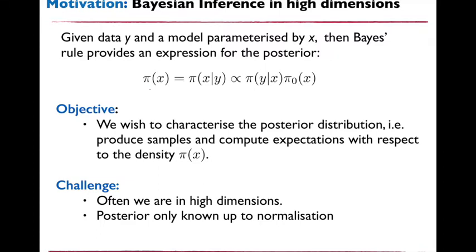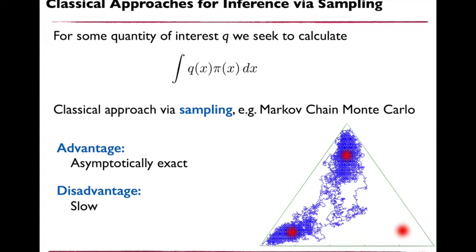This has motivated numerous classical approaches based on Markov chain Monte Carlo (MCMC). These sampling approaches are very generally applicable, very well developed, and a very mature field. The advantage is that they are asymptotically exact — with sufficient computational effort you can arrive arbitrarily close to the true solution. The disadvantage is that convergence to the true solution is often incredibly slow, leading to a lot of recent work on approximate inference methods that trade off asymptotic exactness for increased speed of convergence.